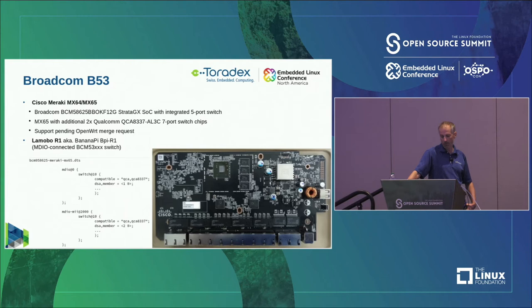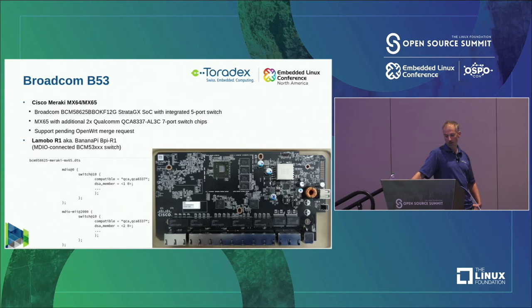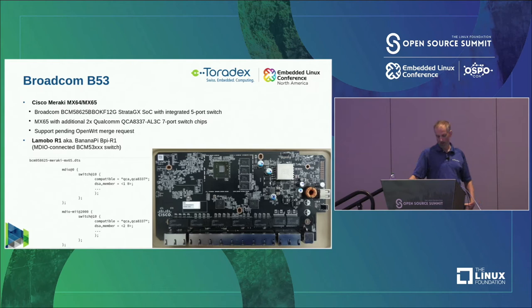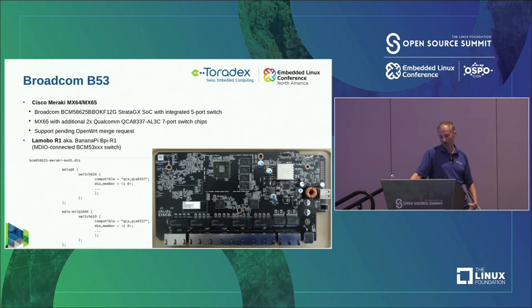Somebody worked on that — there is a merge request pending in OpenWRT, so if you have such a switch and want to run Linux on it, you can find it there. Another platform using the same B53 family is the Lamobo R1, a Banana Pi clone. It has those same switch chips but MDIO-connected. Looking at the device tree, it has two Qualcomm switch chips connected through different MDIO buses — so the control plane goes through different buses.